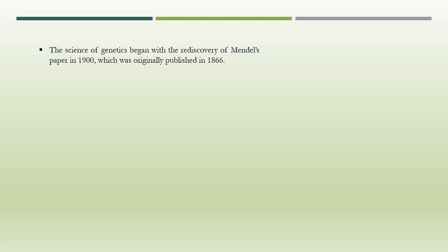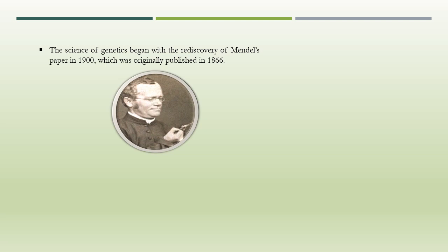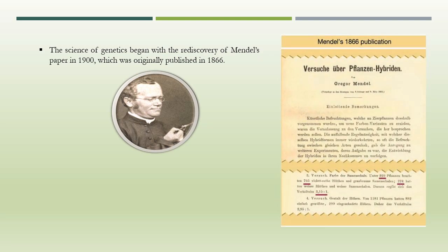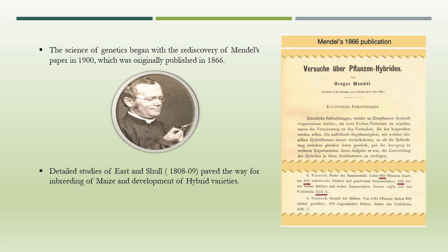But it was left for Mendel (1865) to propose clear-cut laws of inheritance. Breeding methods based on hybridization acquired a scientific basis with the elucidation of various genetic and cytogenetic principles following the rediscovery in 1900 of Mendel's work published originally in 1866. Subsequently, detailed studies of East (1908) and Scholl (1909) on inbreeding in maize paved the way for development of hybrid varieties, first in maize and later in several other crops. Intervarietal hybridization continues to be the major approach for improvement of self-pollinated crops, where the final product is a pureline or hybrid variety. In cross-pollinated crops, the final product is a hybrid, synthetic, or composite variety, and in asexually propagated crops, the final product is a clone.